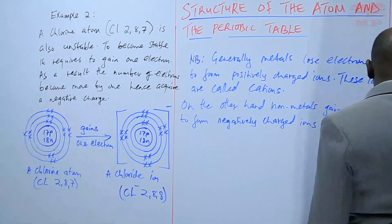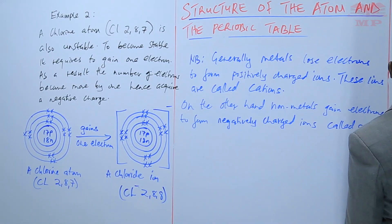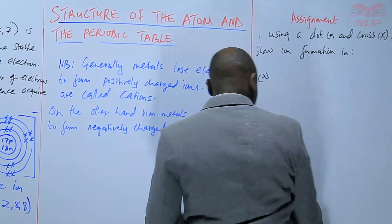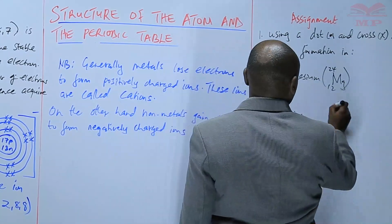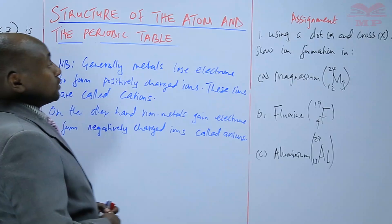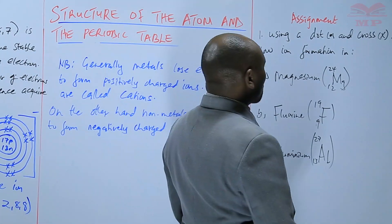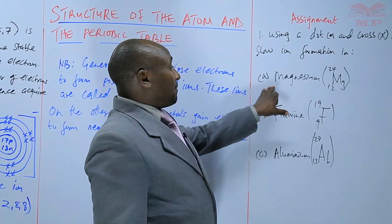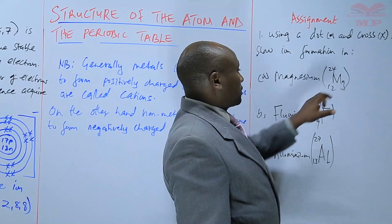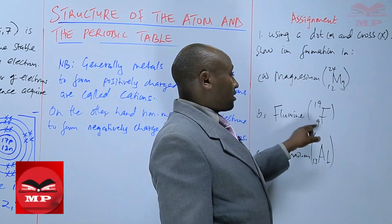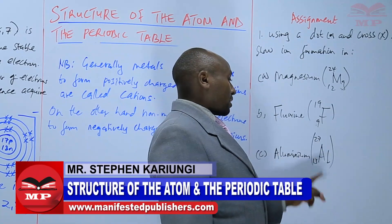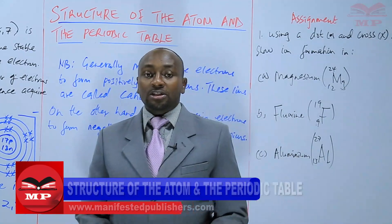Non-metals gain electrons to form negatively charged ions called anions. Assignment: using a dot and cross diagram, show ion formation in magnesium (mass number 24, atomic number 12), fluorine (mass number 9, atomic number 9), and aluminium (mass number 27, atomic number 13). We'll stop there until next time. Goodbye.